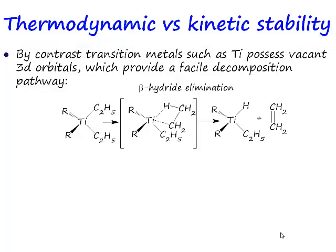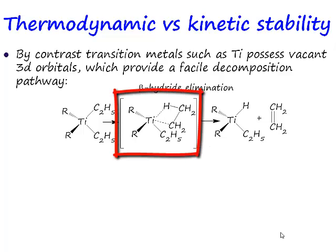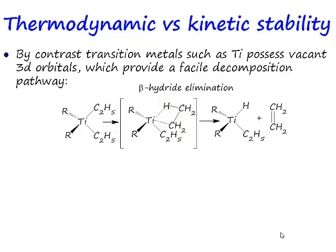The origin of the instability of transition metal alkyls is frequently the following reaction. If you start off with a titanium dialkyl species — diethyl titanium — it doesn't really matter at this stage what the other R ligands are. If you have a compound like that, then what you've got are two ethyl ligands. We've drawn out one of these ethyl ligands: titanium, CH2, CH3. What we call a beta hydrogen — this is the alpha carbon, this is the beta carbon.